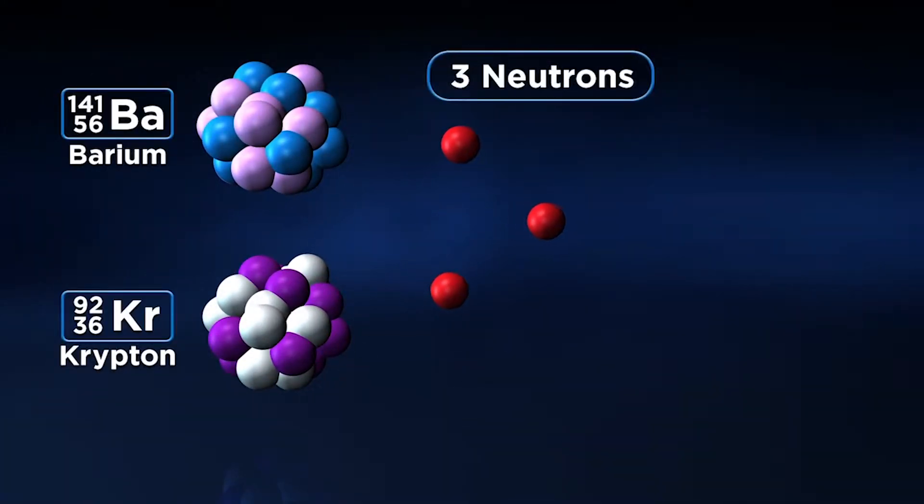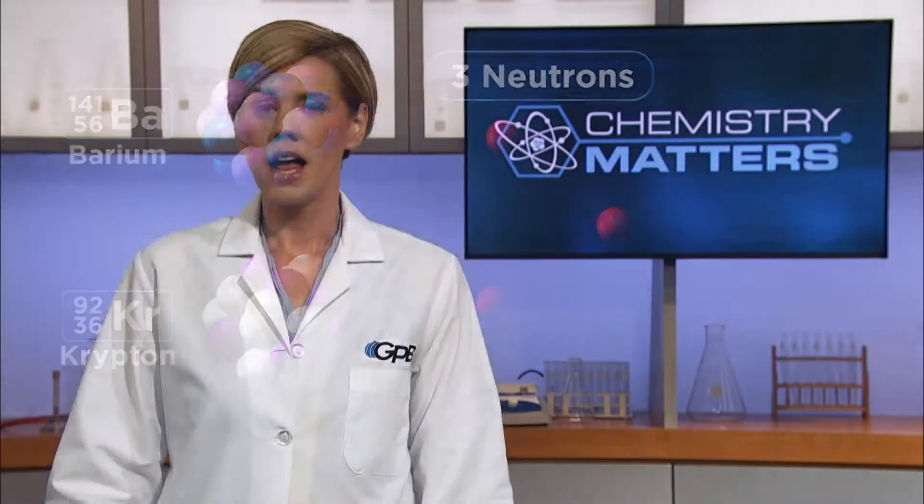represented by the animation you see here. But even more important for our Georgia science standards is the process of nuclear fusion and how the nuclear fusion process produces all of the elements on the periodic table that are heavier than hydrogen.